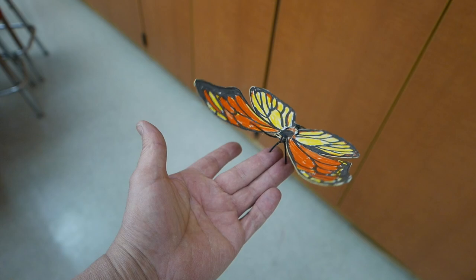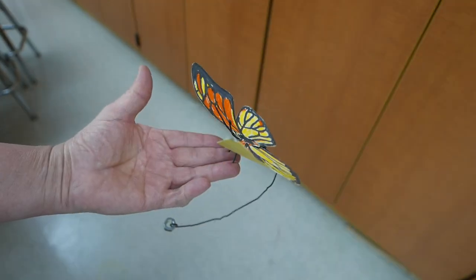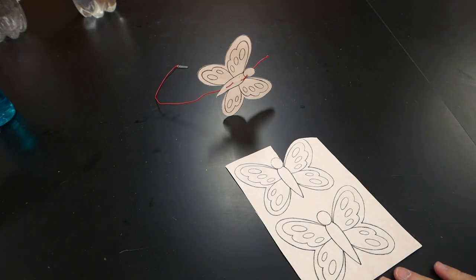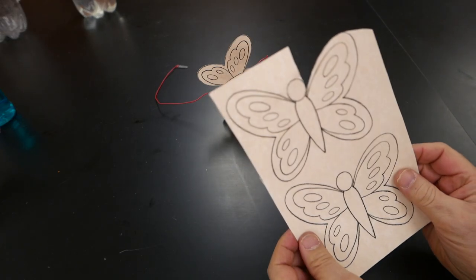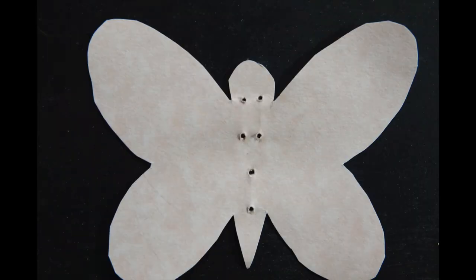The balancing butterflies have been especially popular with younger students. They're easy to make, and we've balanced them on all sorts of things. I started with printing some patterns on some heavy stock paper. Next, add the holes for the wires to go through.